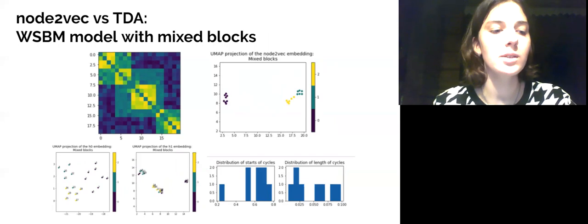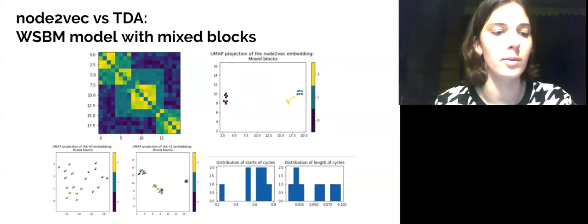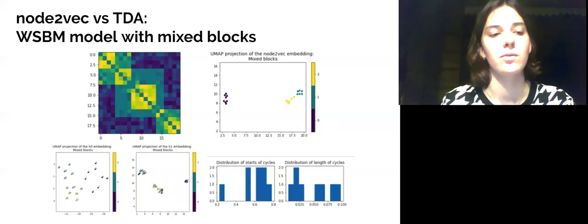Node2vec embedding depicts visual impression and reveals four small blocks. In case of connected components, TDA visualization still pictures standard three block structure, but from the cycle embedding we can notice a mixed structure of the block.